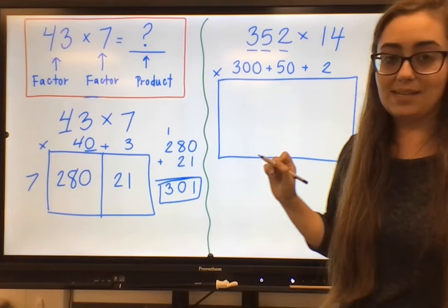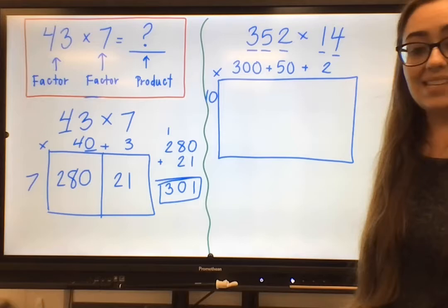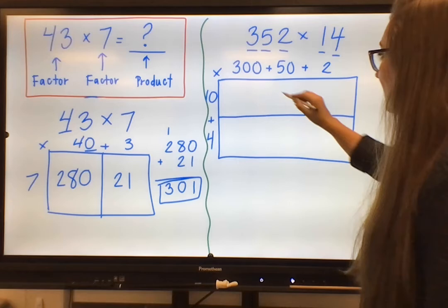And we have our first factor. I'm going to draw that little multiplication symbol in the top left corner. And now I'm going to move on to my second factor of 14. I first look at that first digit in the tens place, which is showing me 1. So 1 ten, 10.